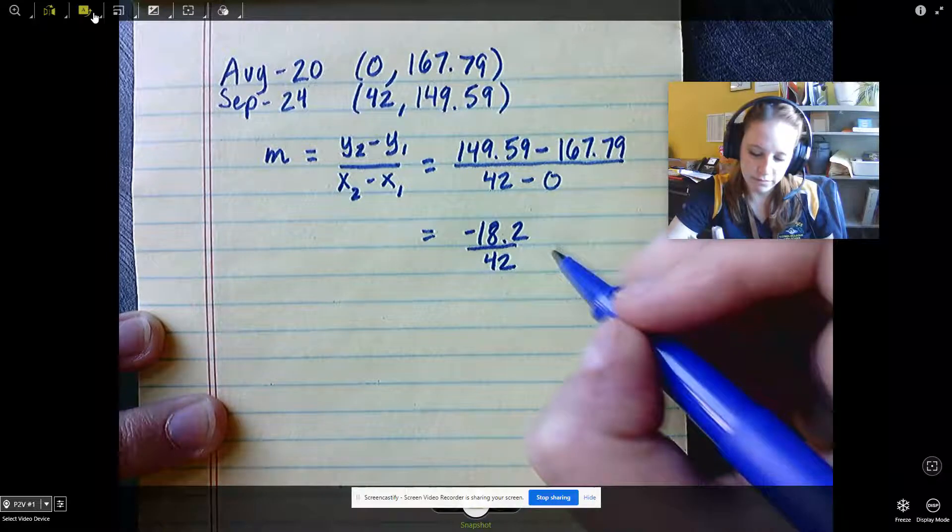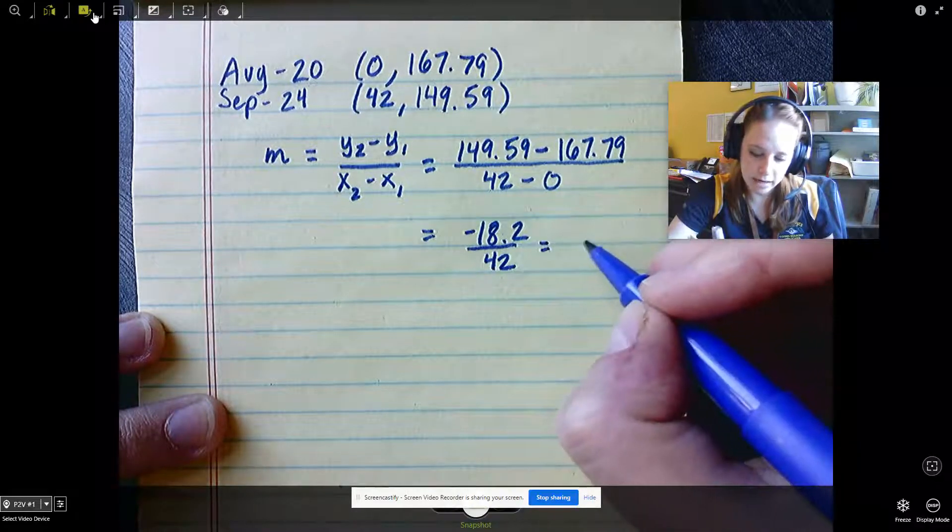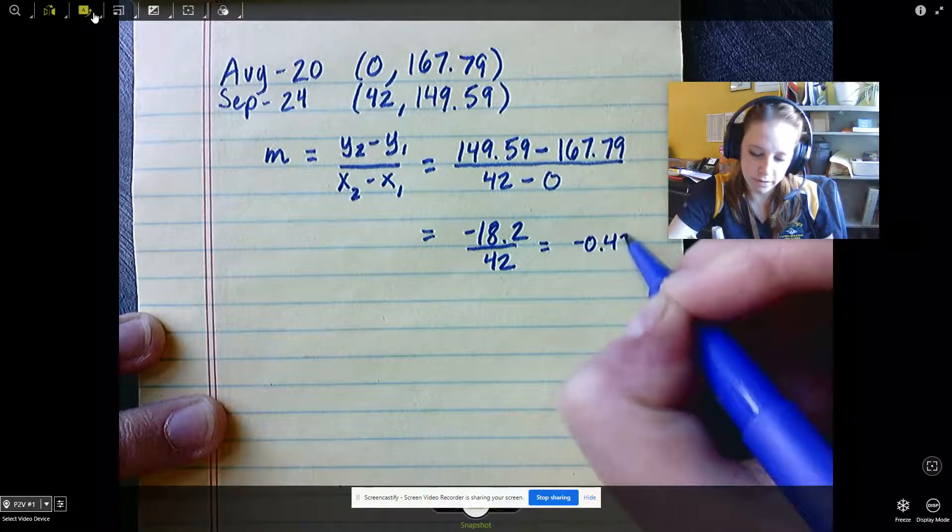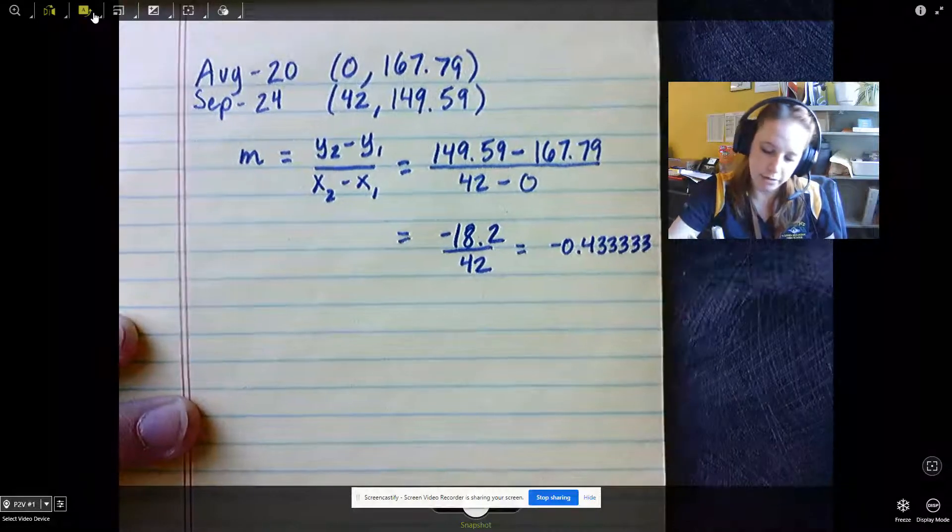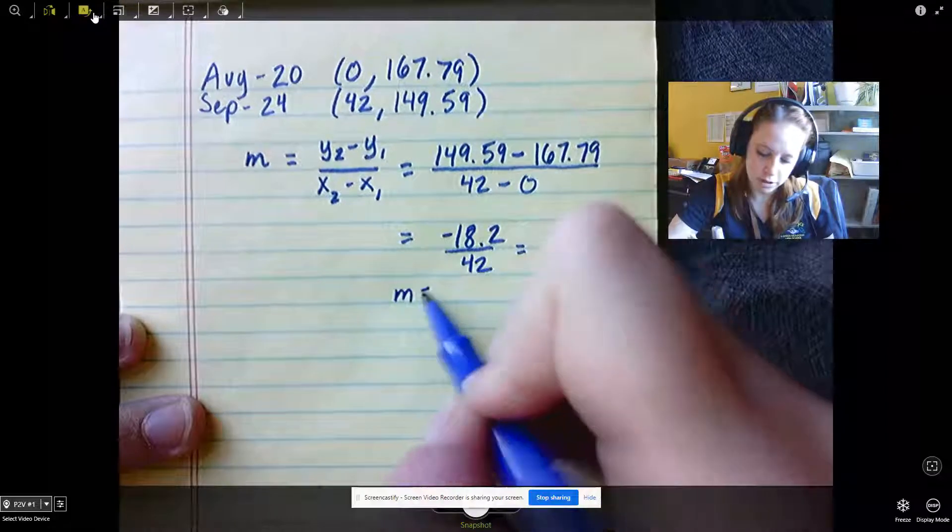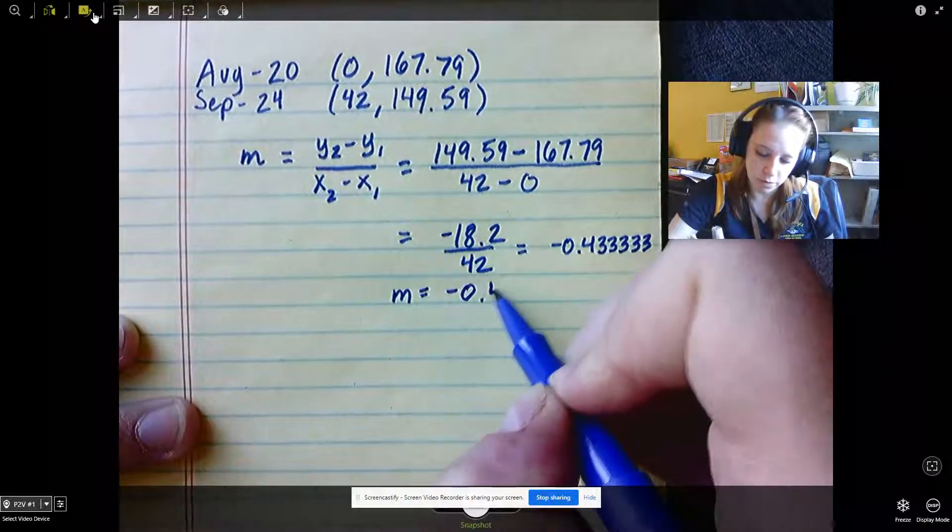When we divide those, you're going to get negative 0.433333 repeating. So a nice way to write our slope would just be negative 0.43.